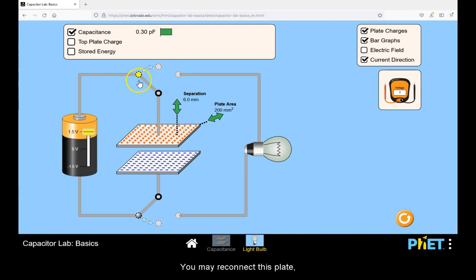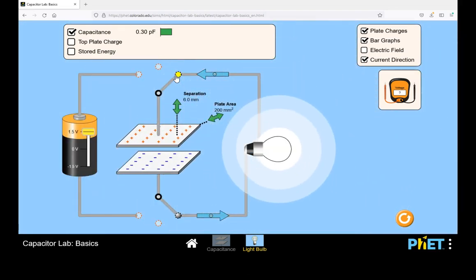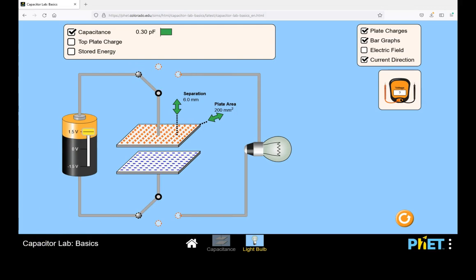You may reconnect this plate by clicking here to the light bulb, upon which the charges will move in the circuit to discharge their energy. The simulator can calculate the charge and energy for you.